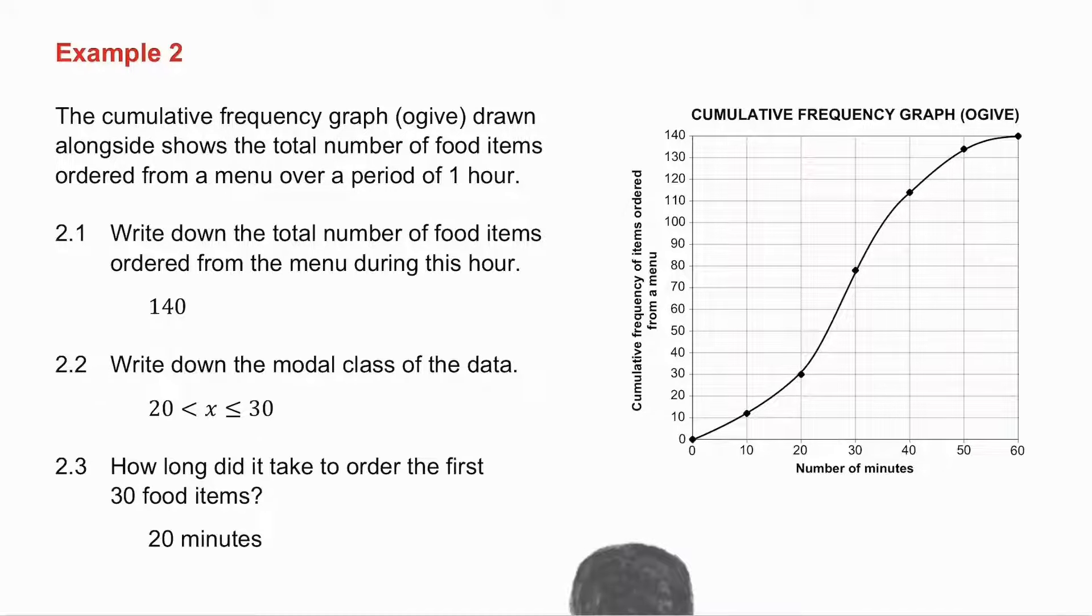2.2 asks me to get the modal class. Now, the modal class is the one that has the most numbers in it. So that's going to be on my ogive where it's got the highest difference between the two values. And the biggest gap is there. So my modal class is 20 to 30.